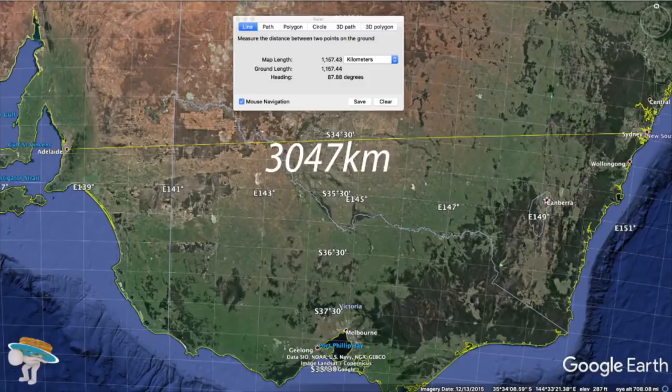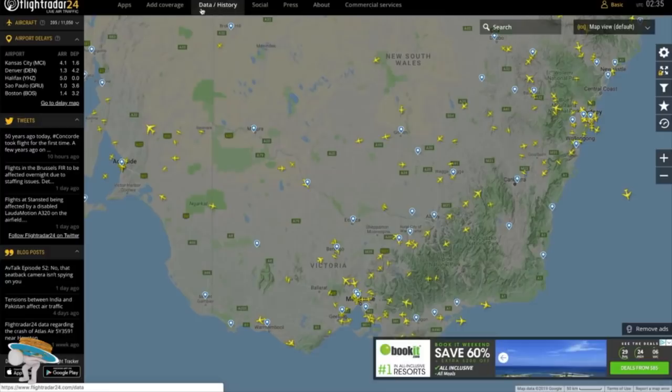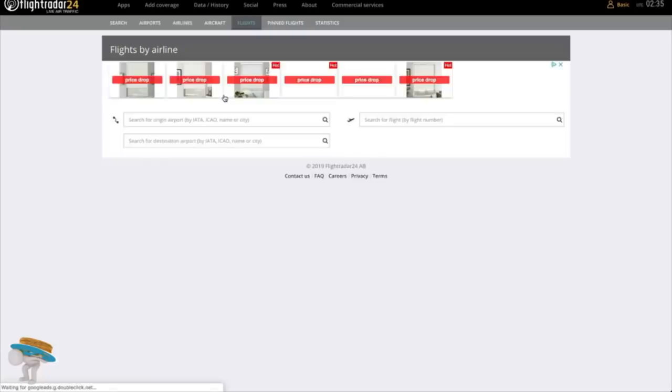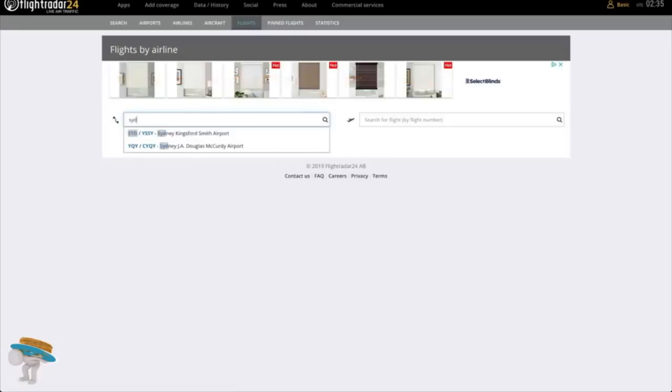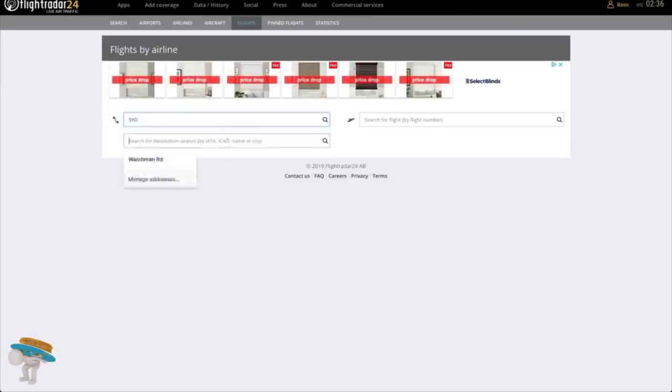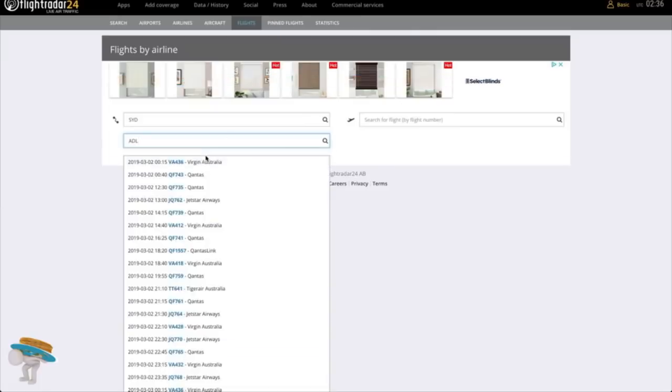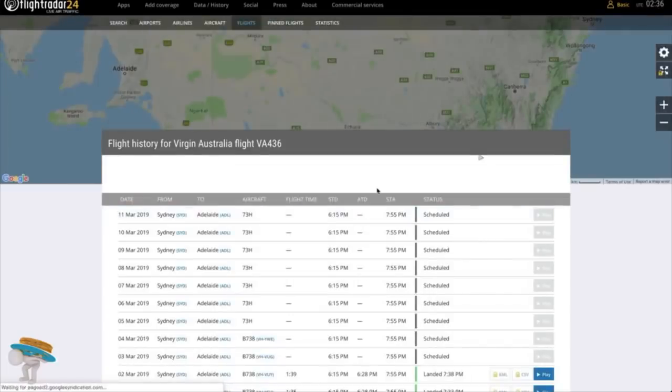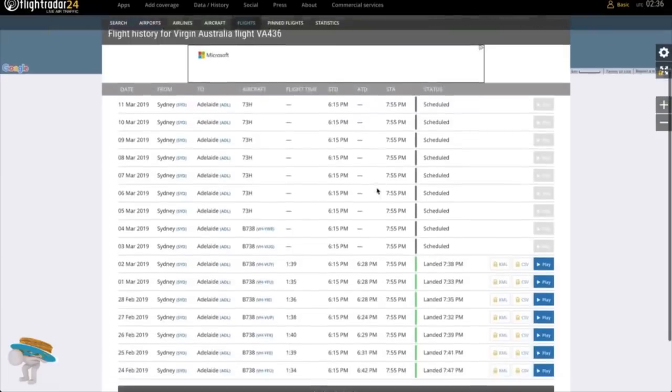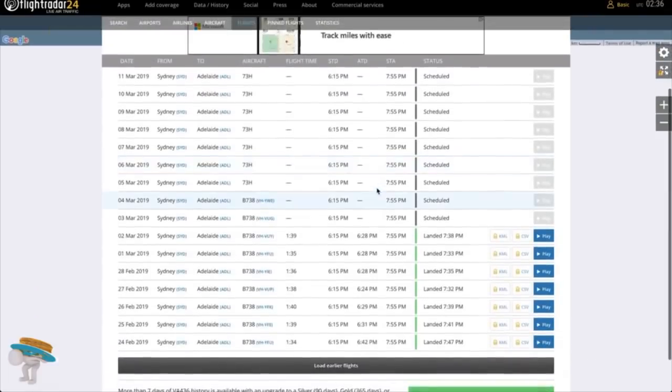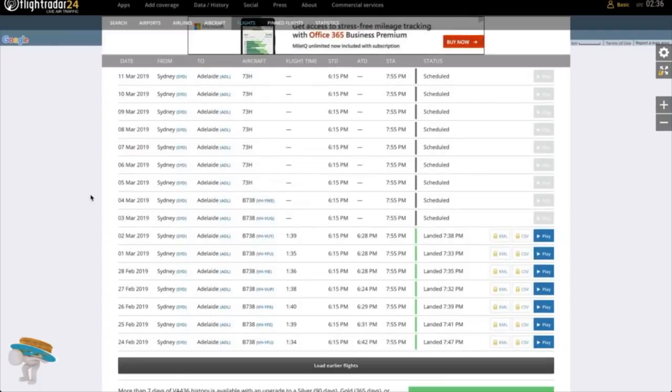But what about flights? Let's take a look to see if there's any flights between Sydney and Adelaide. And wouldn't you know what there are? At least once every day or two. And these are real flights, with real people that get on a plane at one city and get off a plane at the other city.